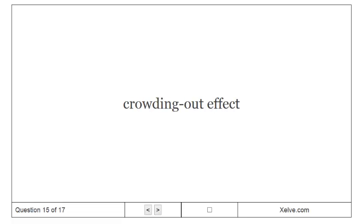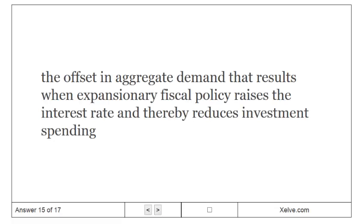Crowding out effect. The offset in aggregate demand that results when expansionary fiscal policy raises the interest rate and thereby reduces investment spending.